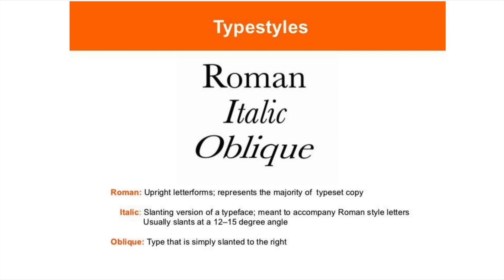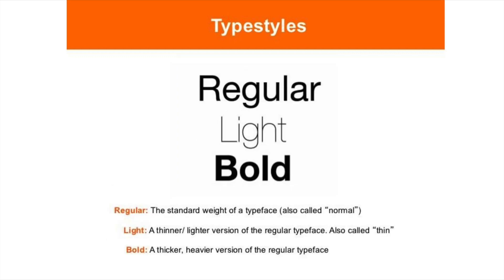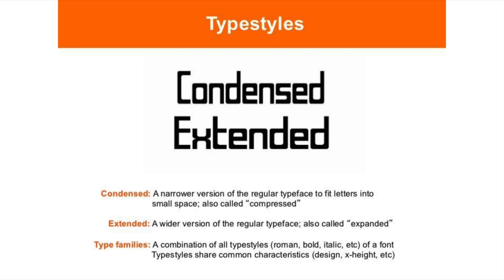Italic contains a slanted version of the typeface. Regular, light, and bold are styles we normally use. Condensed fonts are a narrower version of a regular typeface to fit letters into a small space, like compressed type. Extended fonts are a wider version of the regular typeface, also known as Expanded.